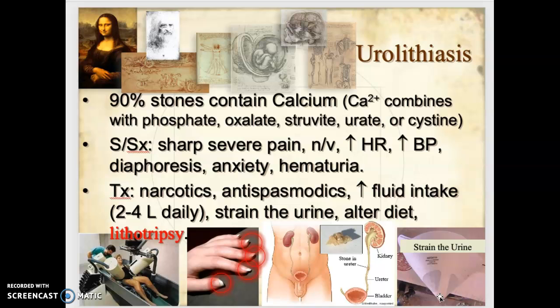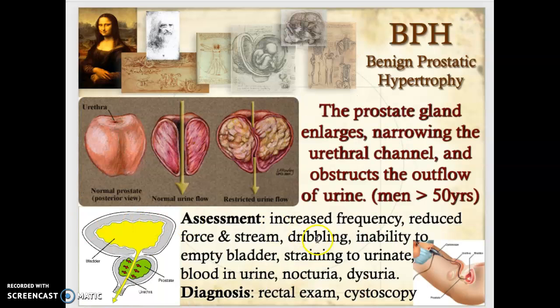If a patient develops stones repeatedly, the lab will analyze the stone type so the patient can alter their diet to decrease future formation. A newer treatment is lithotripsy, where the patient is placed in what looks like a large jacuzzi and ultrasound waves are shot at the stones to break them up and help them pass.